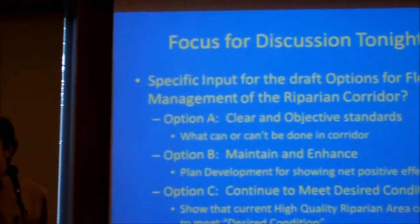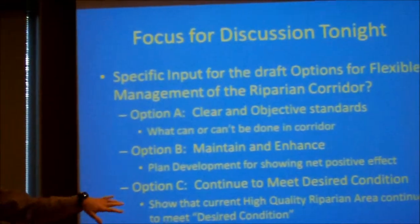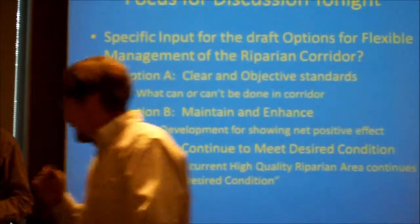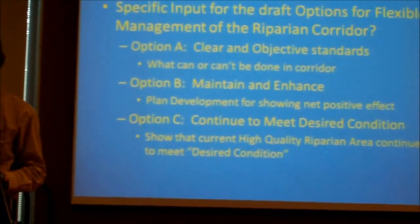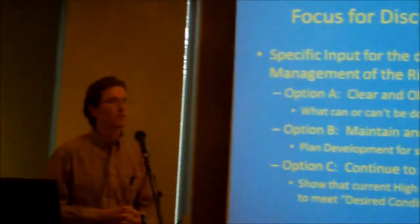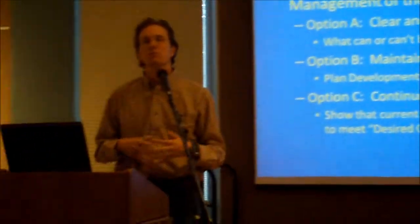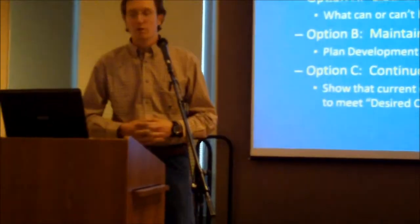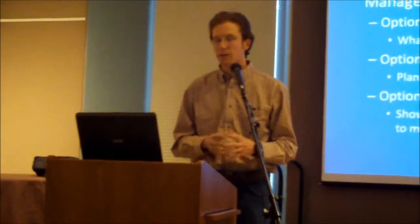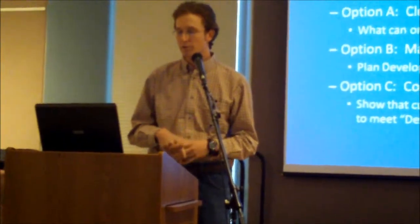We have two whiteboards here, so if there are questions we want to park and come back to, that's fine. We wanted to focus on these ideas around flexible options. The first one — and hopefully everyone has the draft code — is on clear and objective standards. If someone doesn't want to come up with a unique plan to have some sort of impact in this proposed overlay zone, there are these clear and objective standards that some folks like because it specifies exactly what can or can't be done in the area.